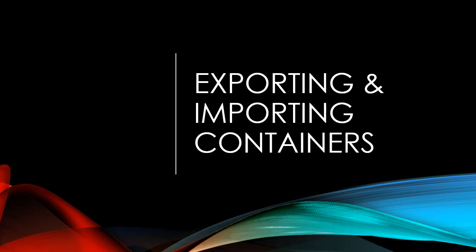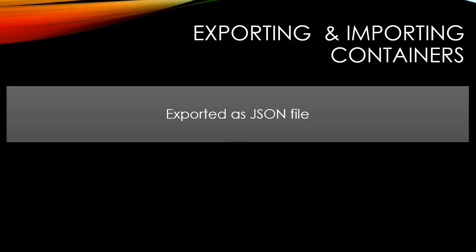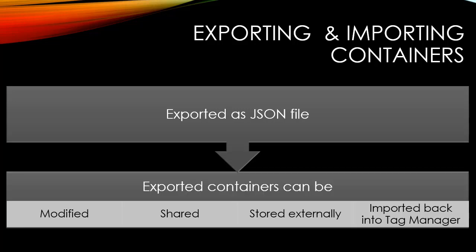Google Tag Manager provides exporting and importing container functionality. When you export a container, it's exported as a JSON file. JSON stands for JavaScript Object Notation — it essentially looks like a text file and can be opened in Notepad. This file format is used for importing and exporting data. Exported containers can then be modified to make bulk changes, shared with other accounts, and stored externally.